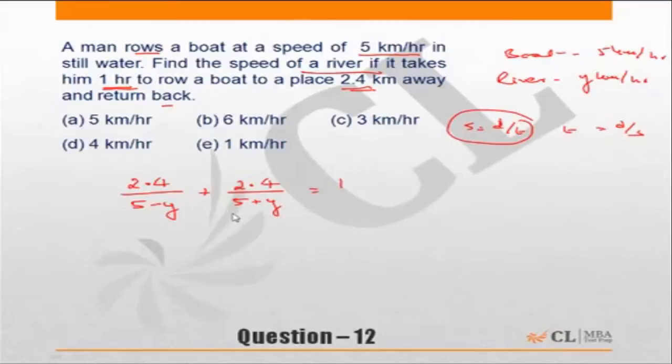Also, to remove your headache of decimals, this effectively should be written as 24 upon 5 minus y plus 24 upon 5 plus y should be equal to 10, which means I multiplied both sides with 10. Multiply with 10 too so that these decimals go out. Now start substituting the choices.